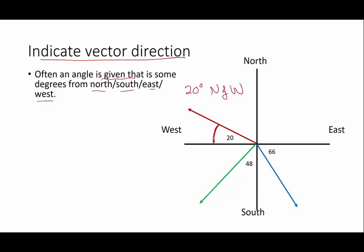All right? If you think you've got this, hit pause and try the next two. All right, let's go through this. This one's 48 degrees. So this is going to be 48 degrees west of south. And this one is going to be 66 degrees south of east. Make sense?